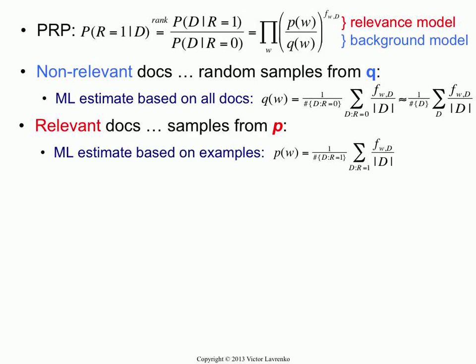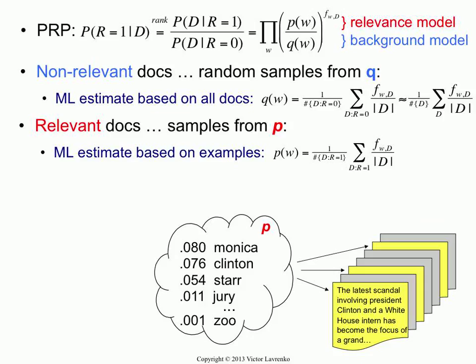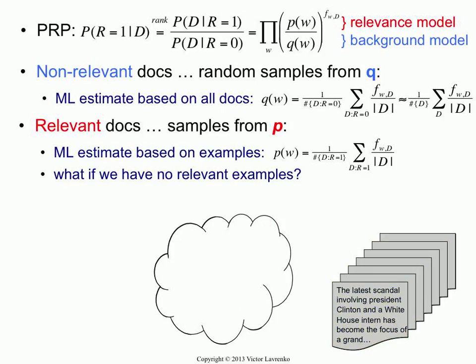The top part is what we're going to call the relevance model — this is the part that corresponds to the relevant class. If we had some examples of relevant documents, you would go over the relevant documents, take the frequency of the word in the document, divide it by length to get the proportion that this word makes up, and then average it over all the relevant documents. For example, if somebody told us we have a bunch of relevant documents, we could estimate a unigram language model P from that collection just by counting how many times different words occur in those documents and normalizing. The trick, of course, is what do you do when you have no relevant examples?